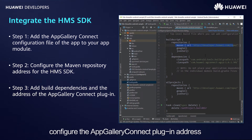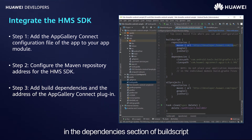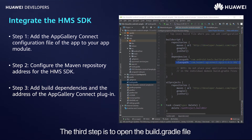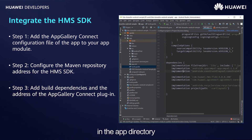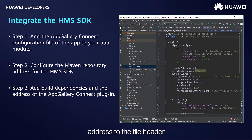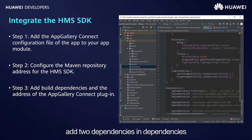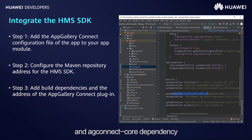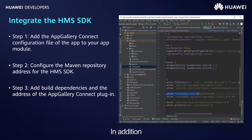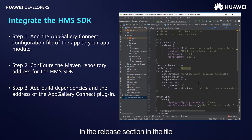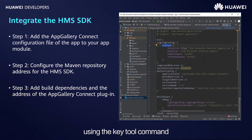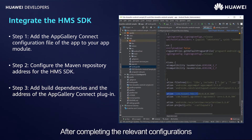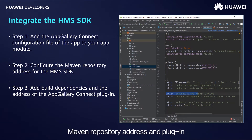Then configure the Maven repository address of the HMS SDK in the repository section of buildscript, and configure the AppGallery Connect plugin address in the dependencies section of buildscript. The third step is to open the build.gradle file in the app directory. Add the AppGallery Connect plugin address to the file header, then add two dependencies: HMS FiddleKit dependency and AGConnect Core dependency. Remember to configure the KeyStore file in the release section. The KeyStore file contains the name, alias, and password of the file. After completing the relevant configurations, click Sync Now to synchronize the Maven repository address and plugin.